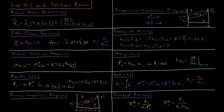Partial molar quantities are functions of temperature, pressure, and the number of moles of all the given substances in the solution. A partial molar quantity is equal to the partial derivative of that quantity with respect to the number of moles of substance i, evaluated at constant temperature, pressure, and constant number of moles of all other components. Examples include partial molar volume, partial molar entropy, partial molar Gibbs energy, etc.